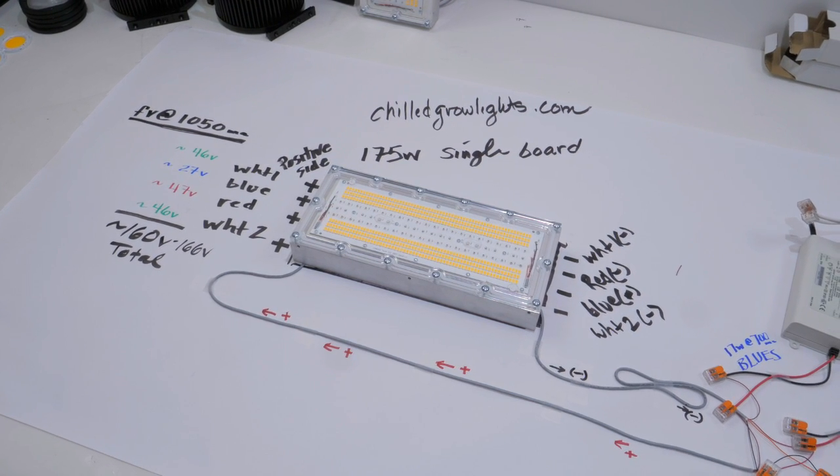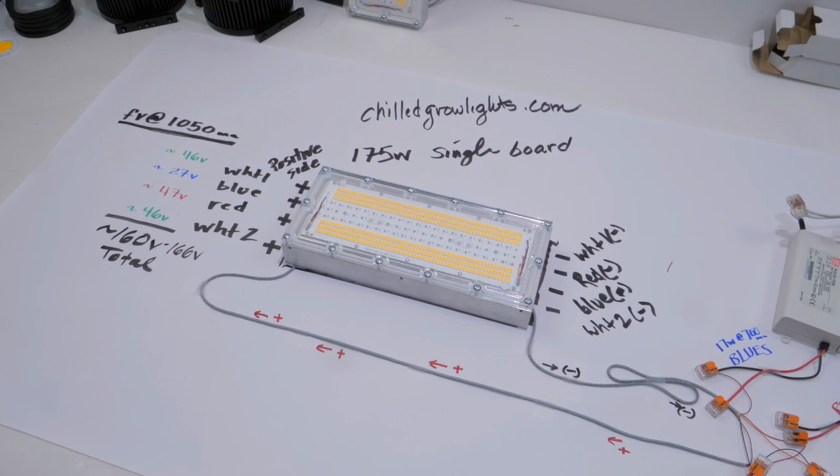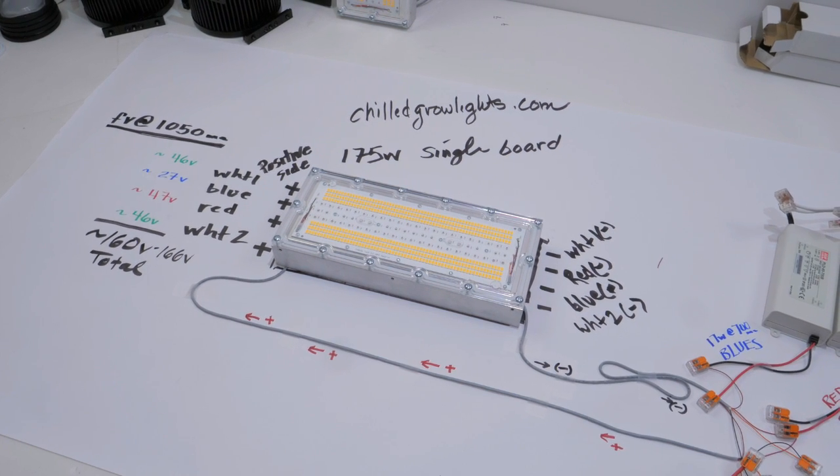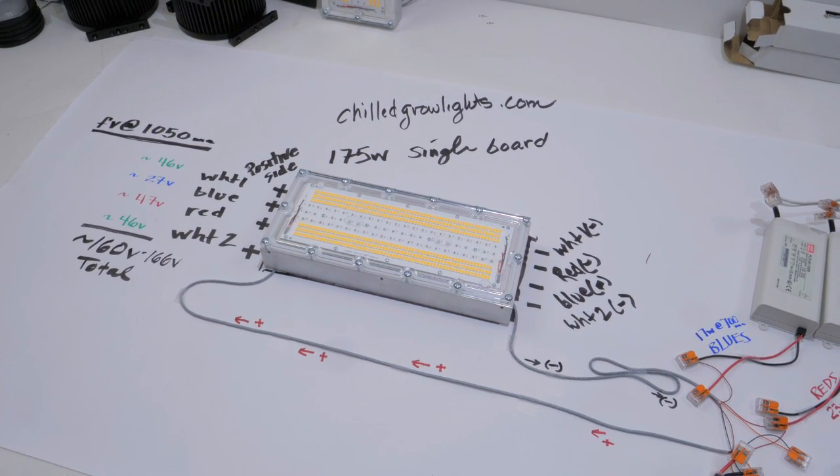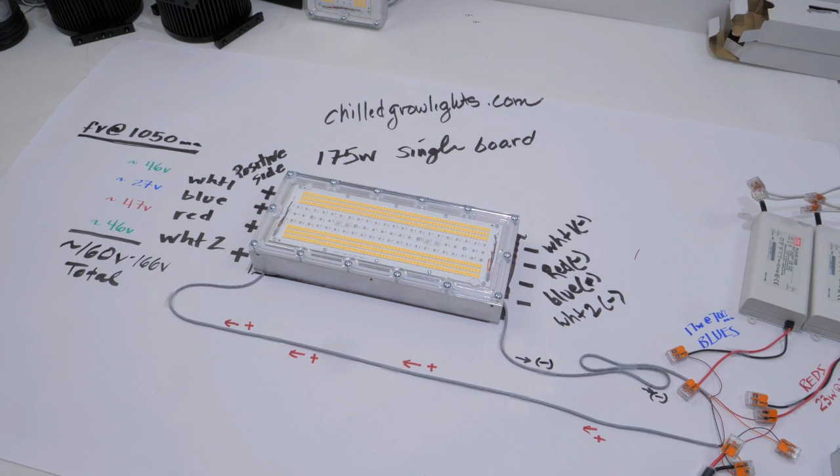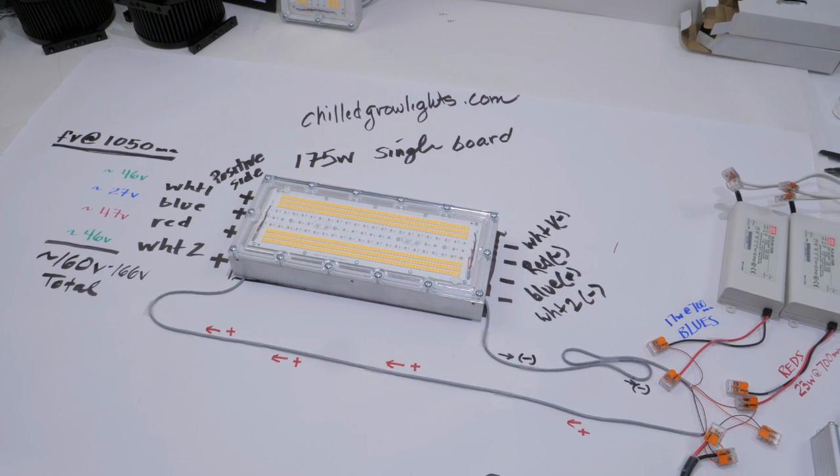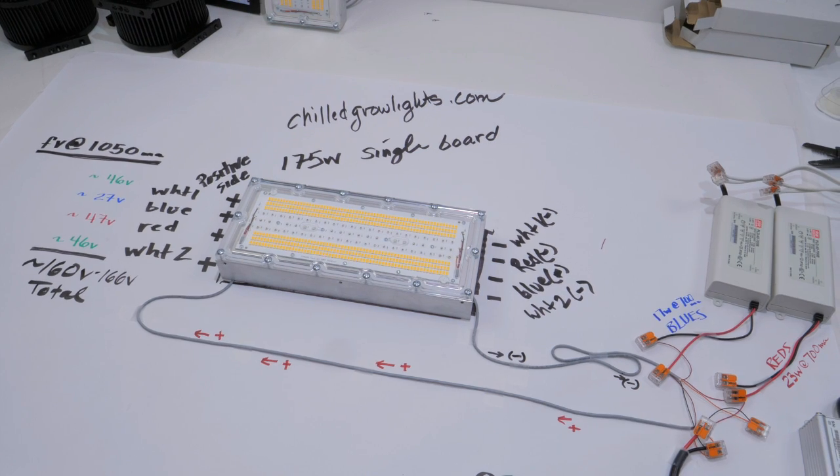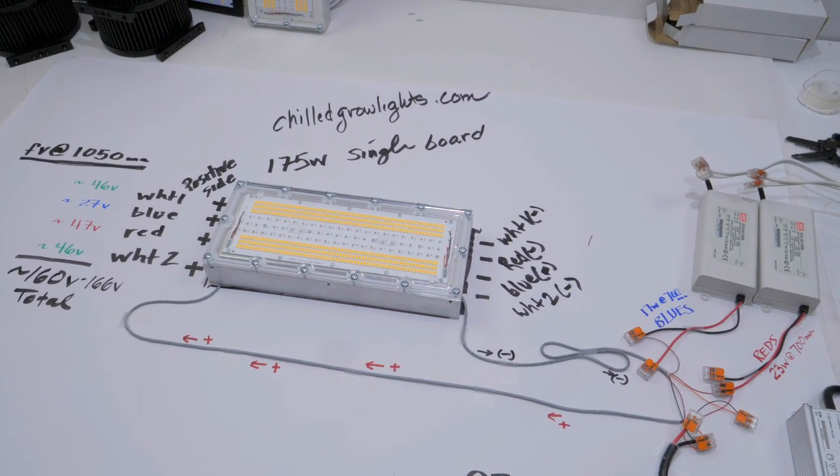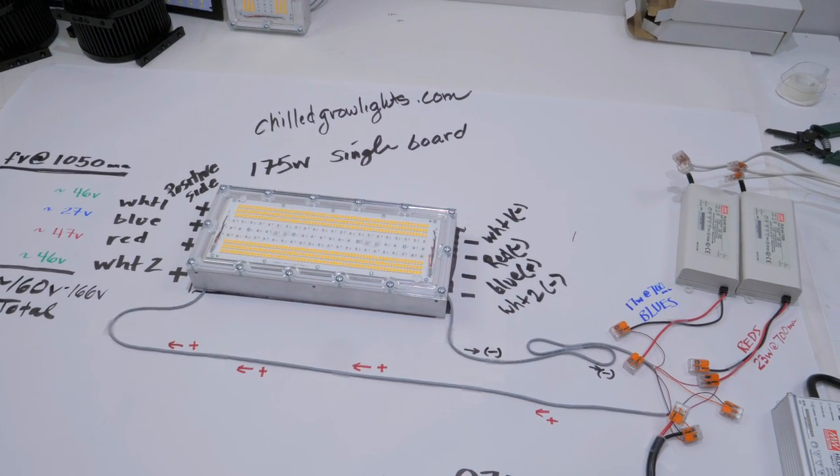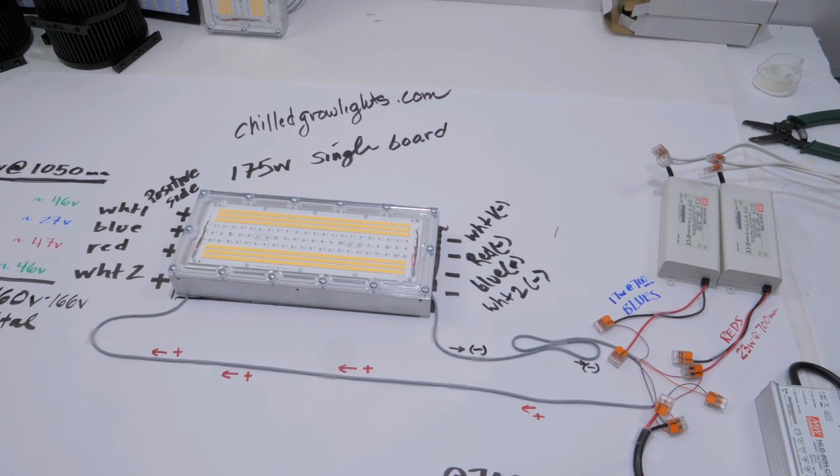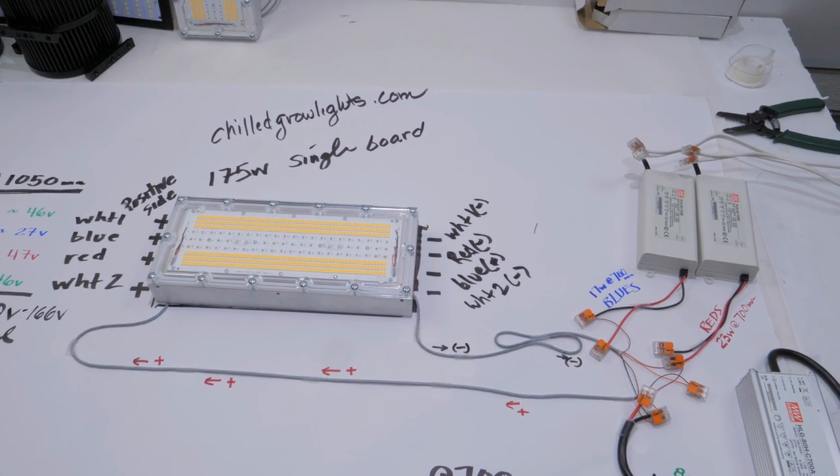The way this works out, I've got this kind of pre-wired here. I'm going to set it up on three different drivers: a single large driver for both white channels, one red driver, and one blue driver. I just grabbed what I had on hand, so don't pay too much attention to these specific drivers. These are actually 700 milliamp drivers just for demonstration purposes.